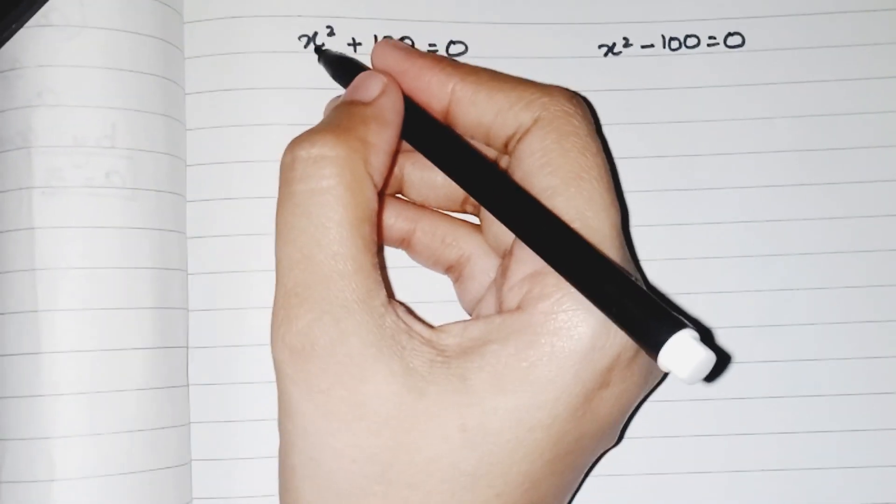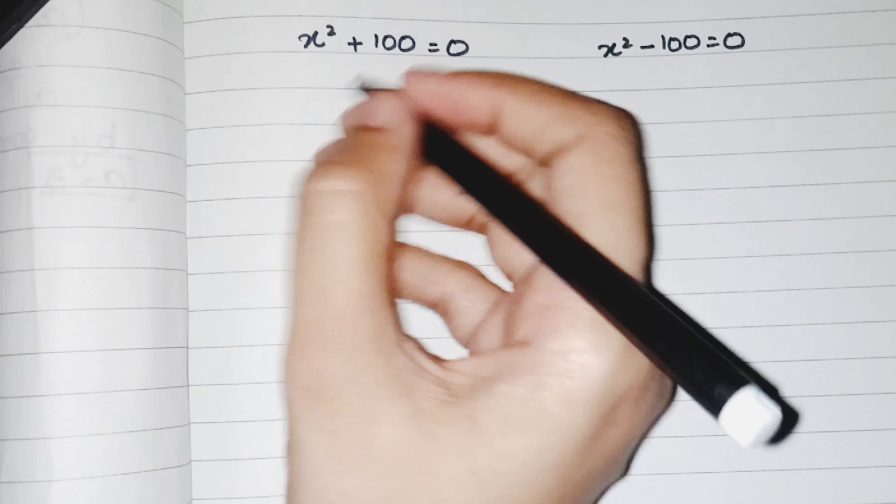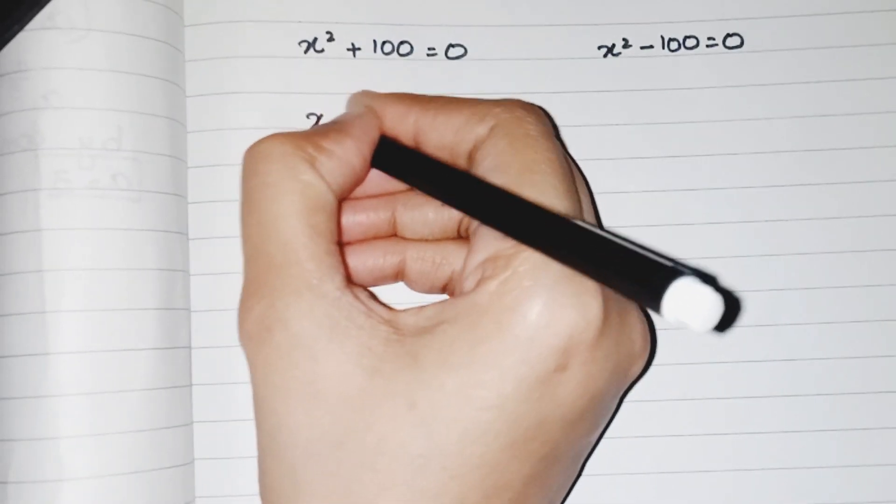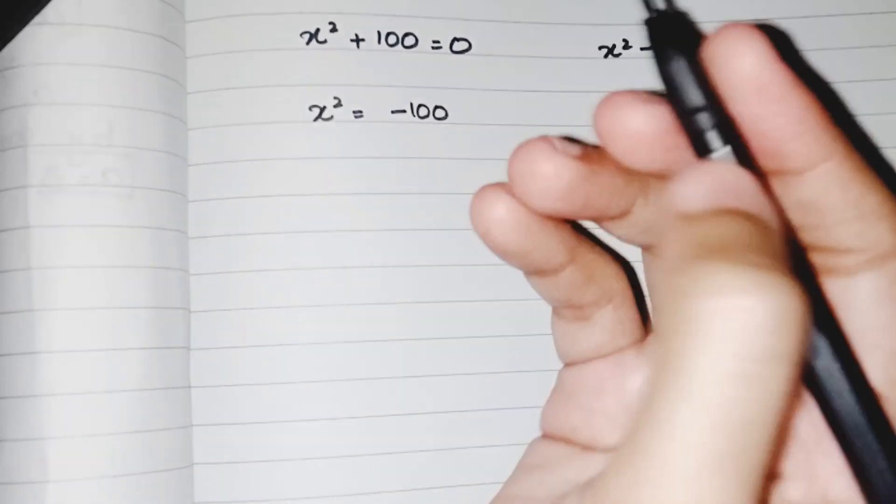Now for finding the value of x we have to move the constant on the other hand. So it will be x squared equals minus 100. When plus 100 moves to another side it will be minus 100.